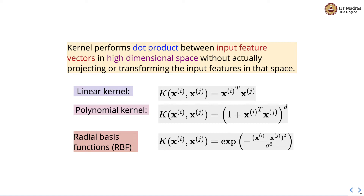There is one more popular kernel which is the radial basis function. We calculate it for two vectors xi and xj by computing the square of the difference between the feature vectors, dividing by sigma squared, multiplying by minus 1, and then applying the exponential operation on the resulting value to obtain the radial basis function kernel.